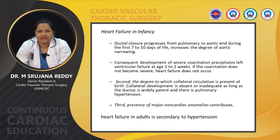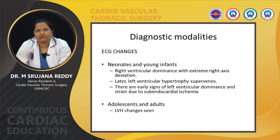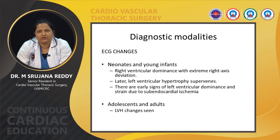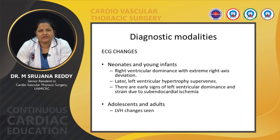Heart failure in adults is secondary to hypertension usually. Coming to the diagnostic modalities, ECG changes in neonates and infants show right ventricular dominance with extreme right axis deviation. Later there can be left ventricular hypertrophy with signs of left ventricular dominance and strain due to subendocardial ischemia.